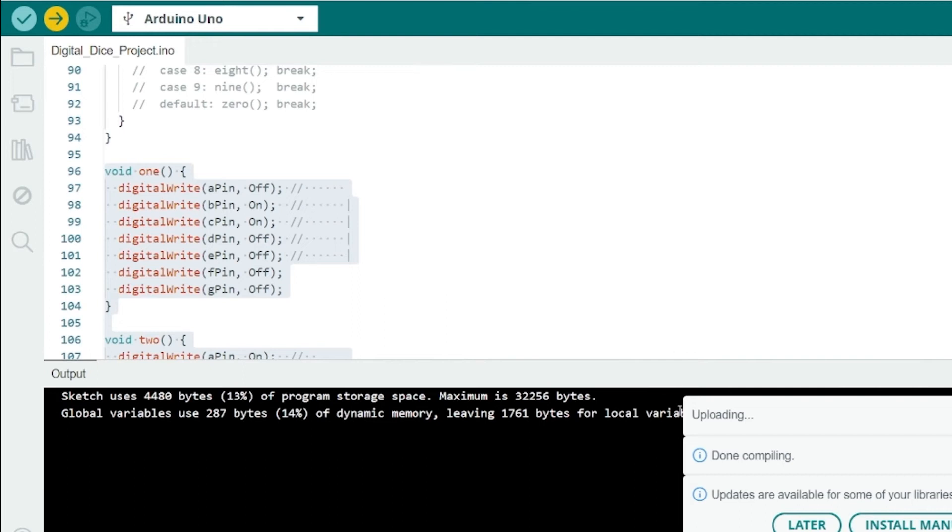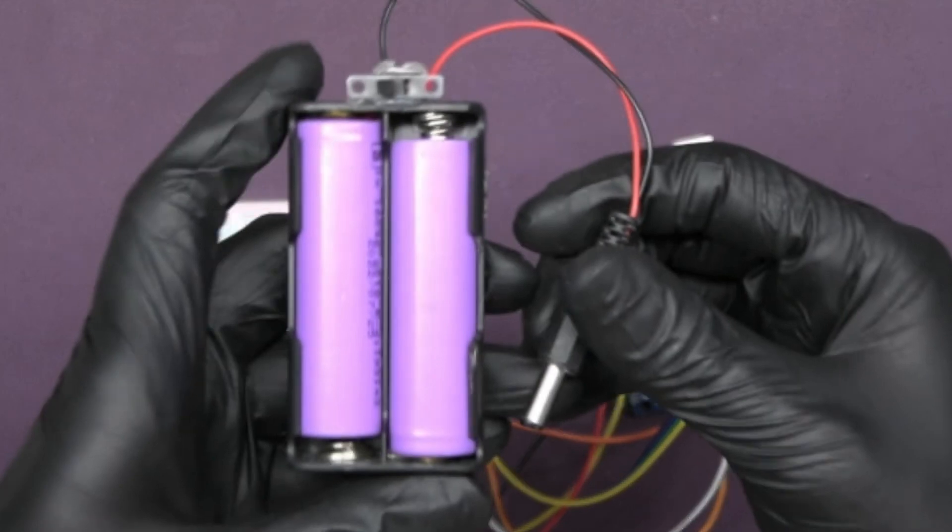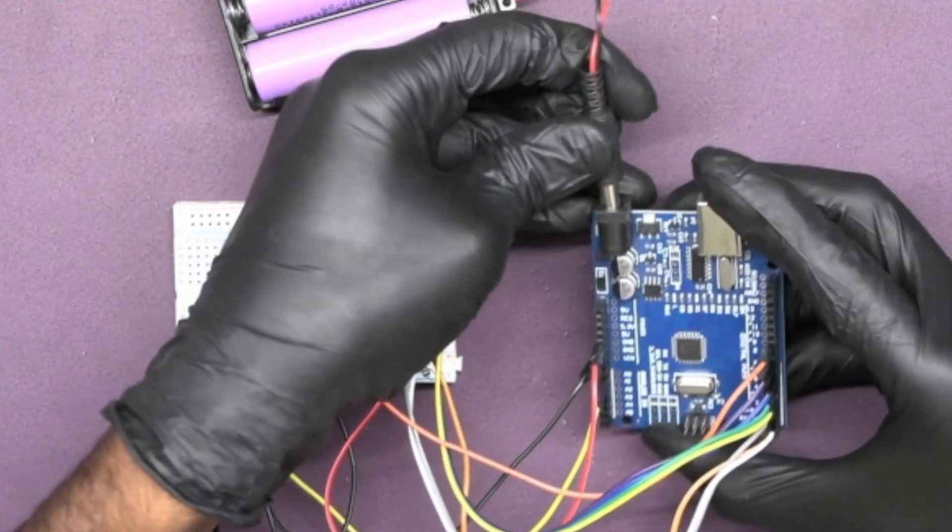And there you have it. Power the Arduino by using your battery pack via DC power jack.